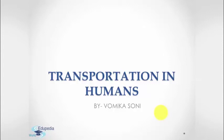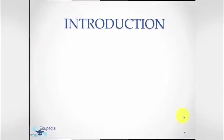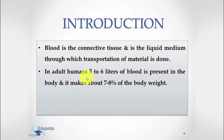Let's begin the video lecture. Blood is the connective tissue and is the liquid medium through which transportation of material is done. In adult humans, 5 to 6 liters of blood is present in the body and it makes about 7 to 8% of body weight. In a living being, the blood is constantly circulated from the heart to the arteries and back through the veins.